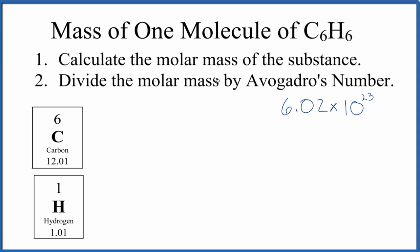To do that, all we need to do is calculate the molar mass for the substance, C6H6, and then divide the molar mass by Avogadro's number. That'll give us the mass of just one molecule of C6H6, benzene.